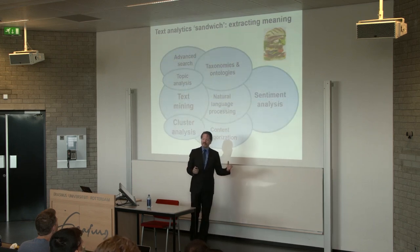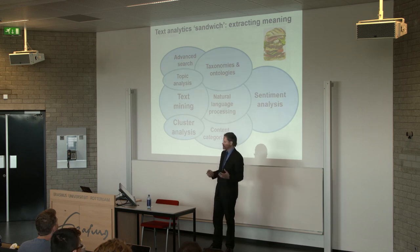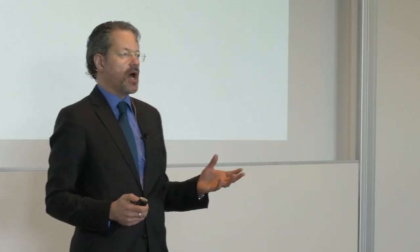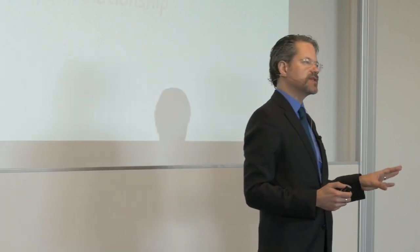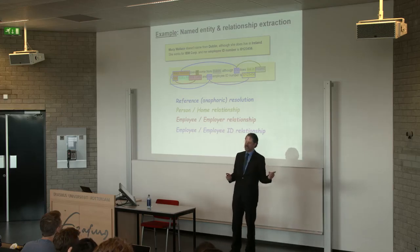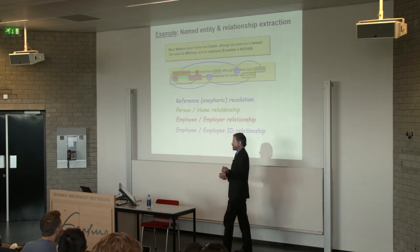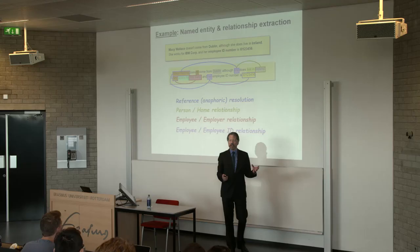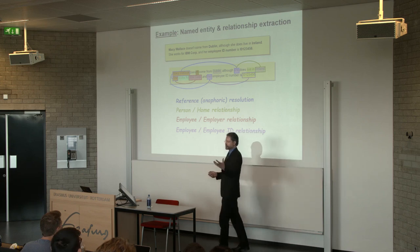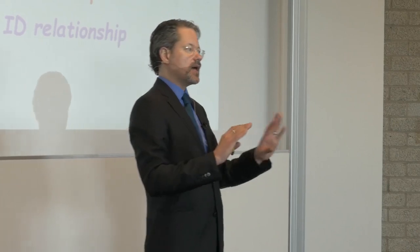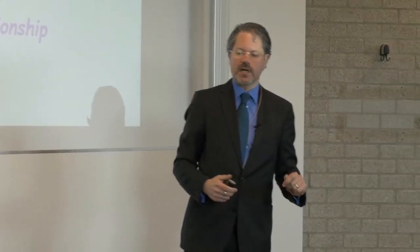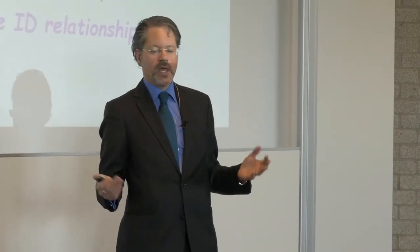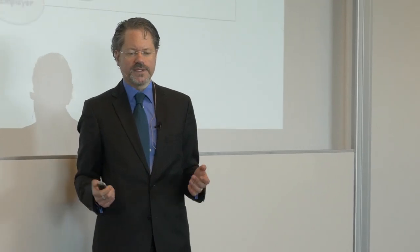We can apply named entity extraction to understand what documents are talking about. Looking at a sentence, we can pull out key terms: proper nouns, places, and implied relationships between these concepts. With an understanding of grammar, the computer can pull apart the sentence and identify key entities, then understand their relationship to one another through probabilistic analysis — such as the relationship of a person to a home, or an employee to an employer. This brings us to understanding relationships of concepts, otherwise known as an ontology.